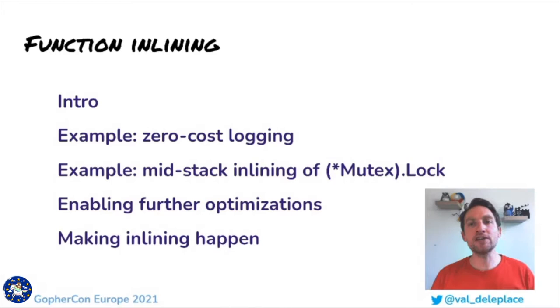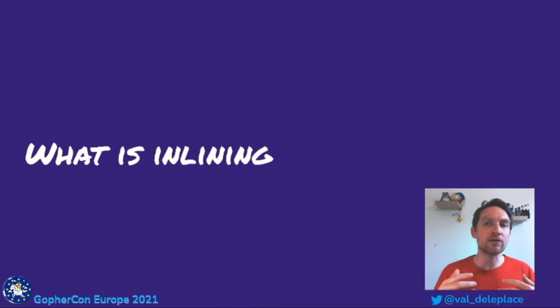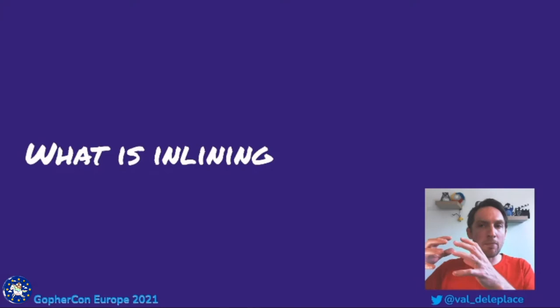Inlining is when the compiler, instead of generating the assembly instructions of a function call, decides to copy and paste the function body instructions at the call site. This tends to make the runtime execution faster, and this also tends to make the compiled binary larger, because now the full body of the function may be compiled at several places inside the program.